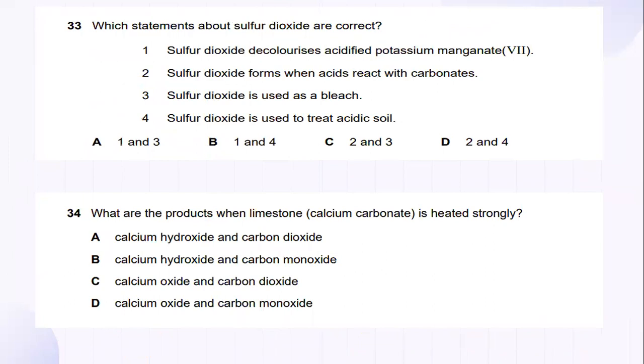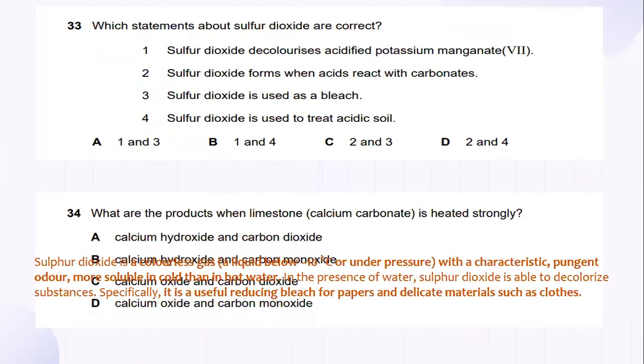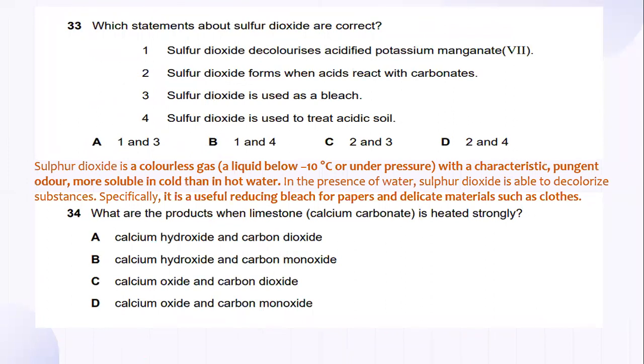Which statement about sulfur dioxide are correct? Sulfur dioxide is colorless gas, a liquid below minus 10 Celsius or under pressure with a characteristic pungent odor, more soluble in cold water than in hot water. And in the presence of water, sulfur dioxide is able to decolorize substances. And specifically, it is useful reducing bleach for paper, delicate materials such as clothes. So, sulfur dioxide is used as a bleach is one of the answer.